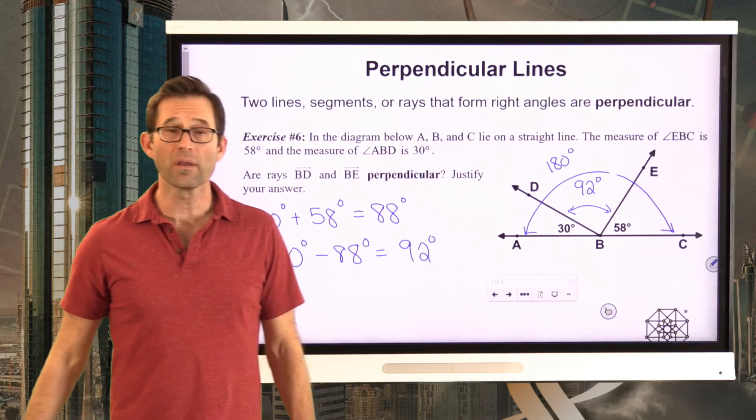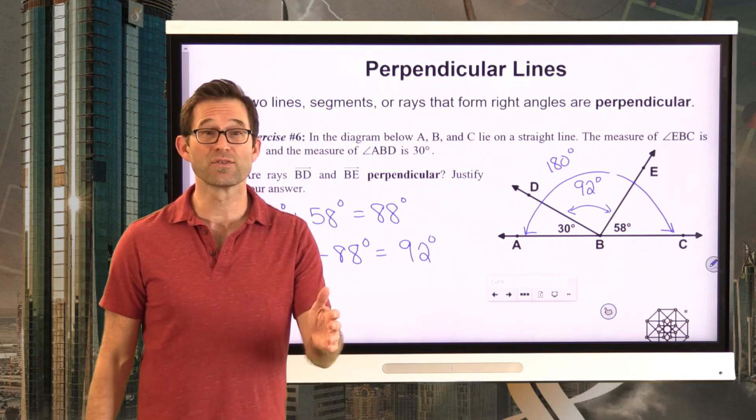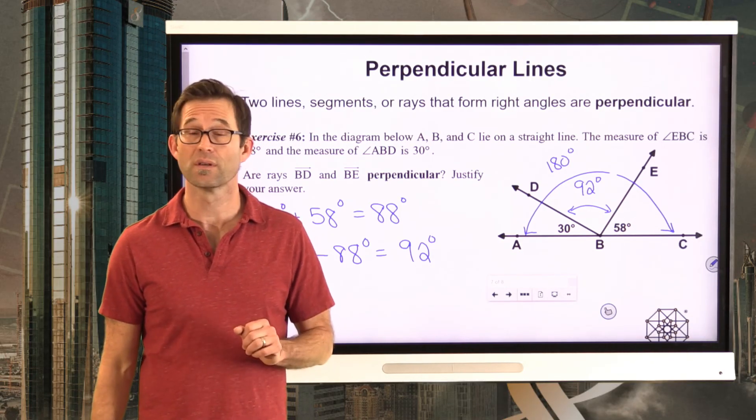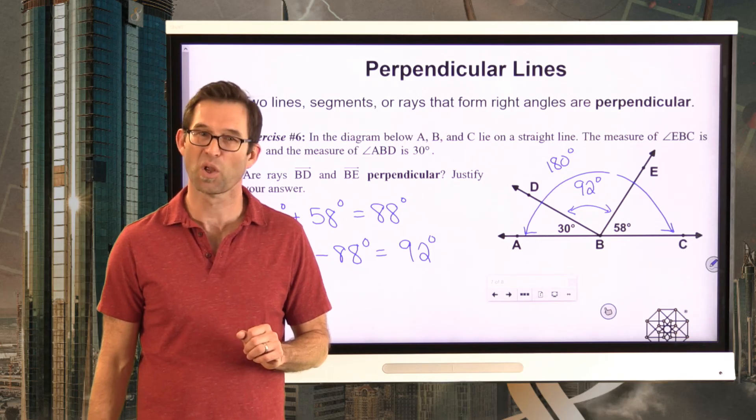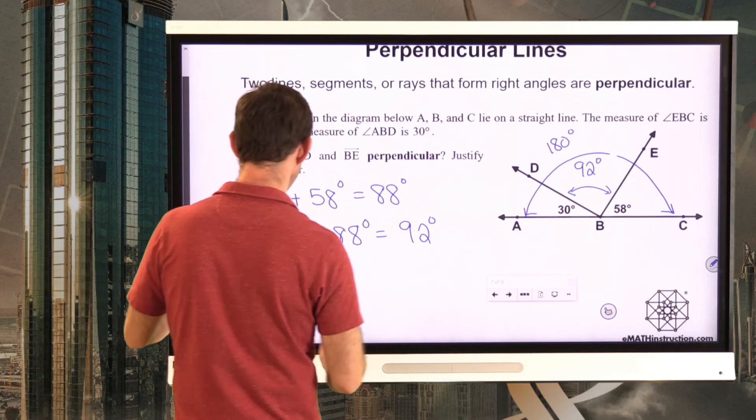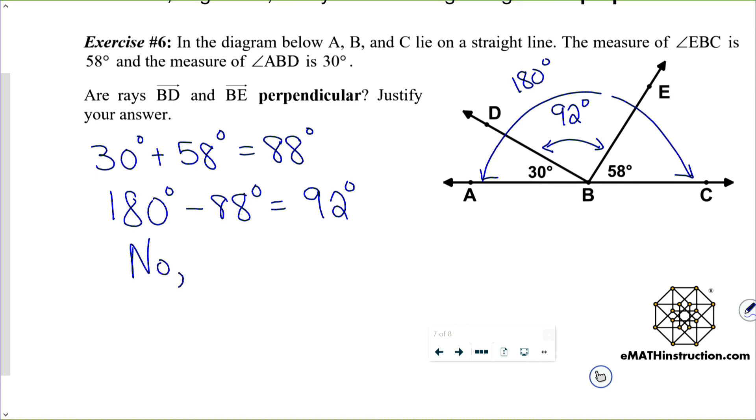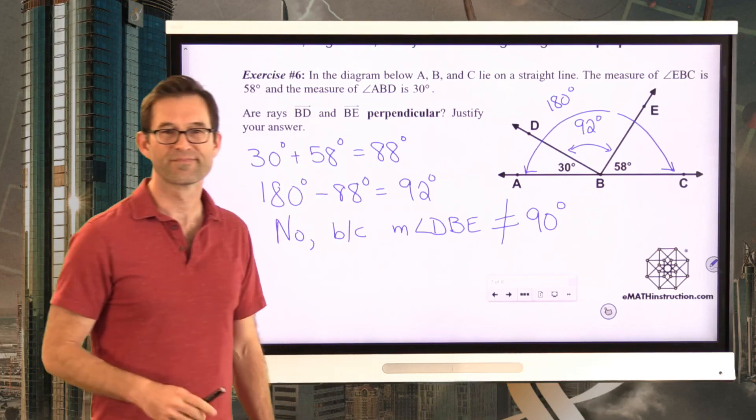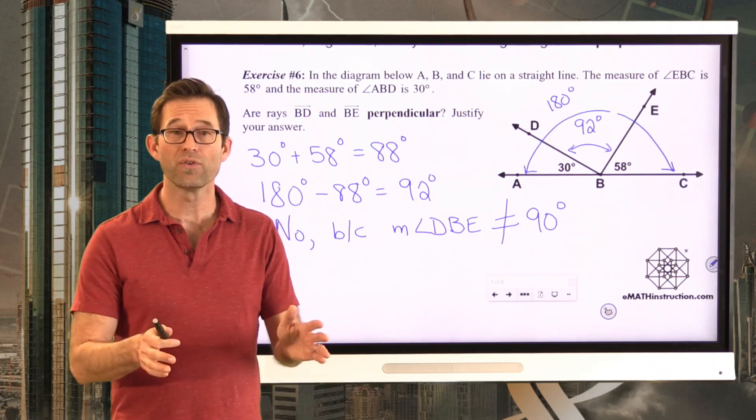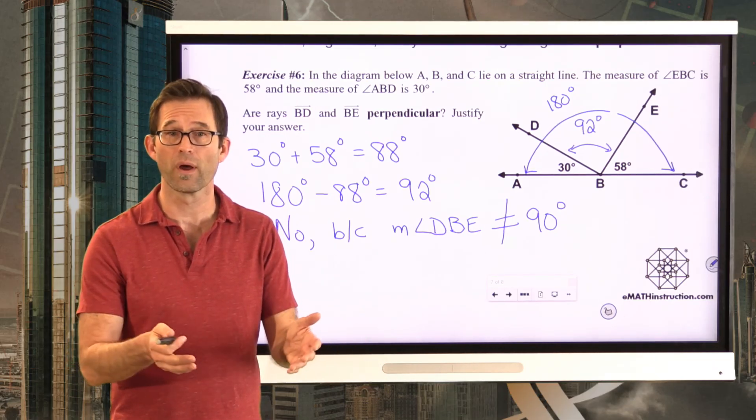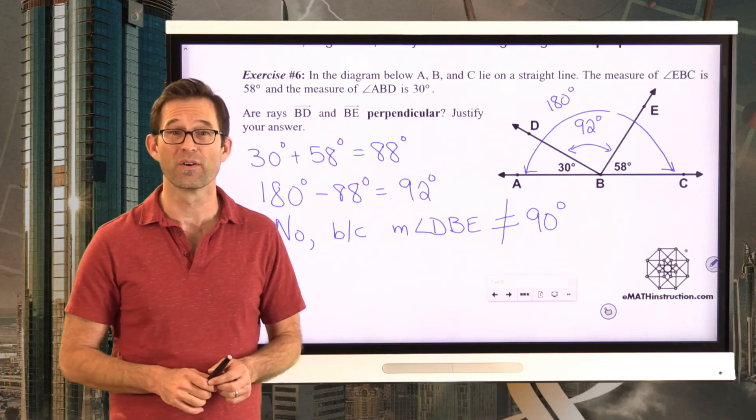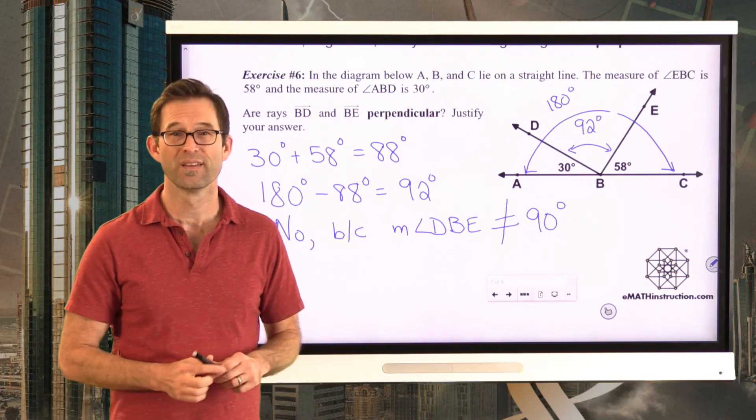This thing is not 90. It is 92 degrees. So, are they perpendicular? Well, the not subtle answer is no. The subtle answer is, they're close, but still no. So, the answer is no. And the justification, besides all the work we did, would be because the measure of angle DBE does not equal 90 degrees. Very important to know that if you're told that two things are perpendicular, they form 90 degree angles or right angles. And, of course, if you're told they're not perpendicular, then they don't.